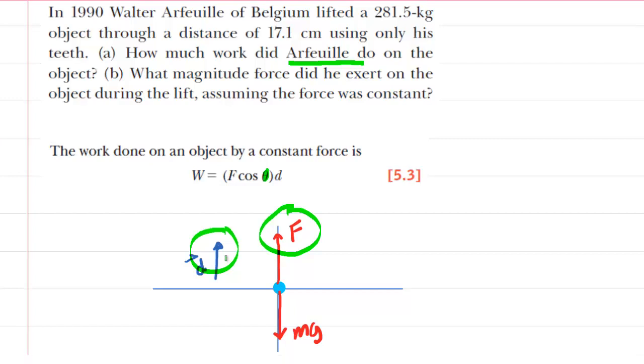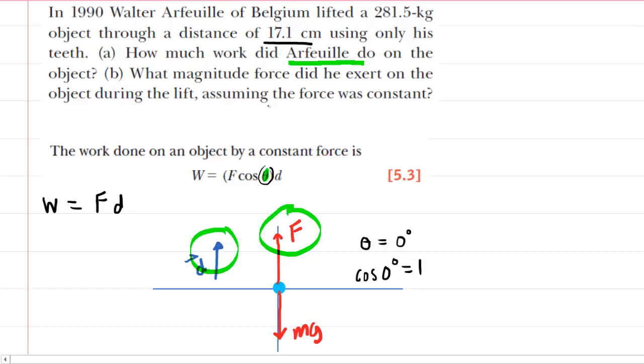Basically, those vectors superimpose on top of one another, so the angle between them is simply zero degrees. Whenever you're computing work, you have to be very careful about the angle. In this case, it's zero degrees because it's always the angle between the force asked about in the question and the displacement. The cosine of zero degrees happens to equal one. So this equation will actually simplify to just work equals the force exerted by the individual times the distance that the object travels. We have the distance, we just need to convert that into meters, but we don't yet have the force.